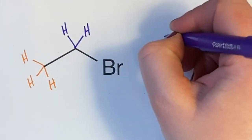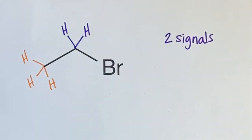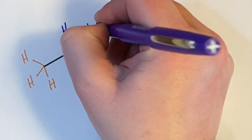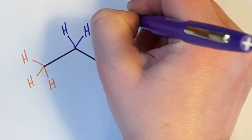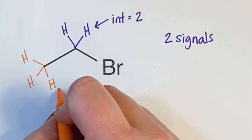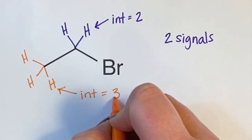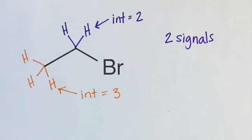Overall, we expect 2 signals in the NMR spectrum. The integration for the first signal is 2, because those 2 protons are chemically equivalent and accounted for in the same signal. The integration for the second signal is 3, because those 3 protons are in an identical environment.